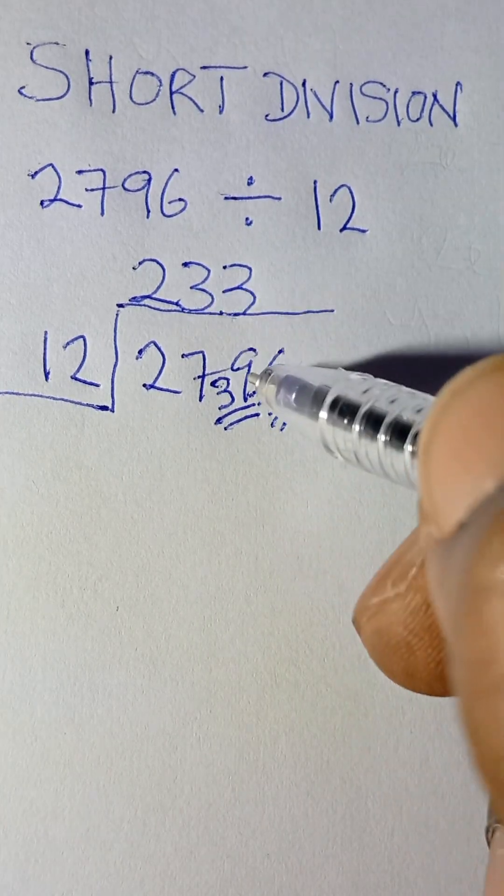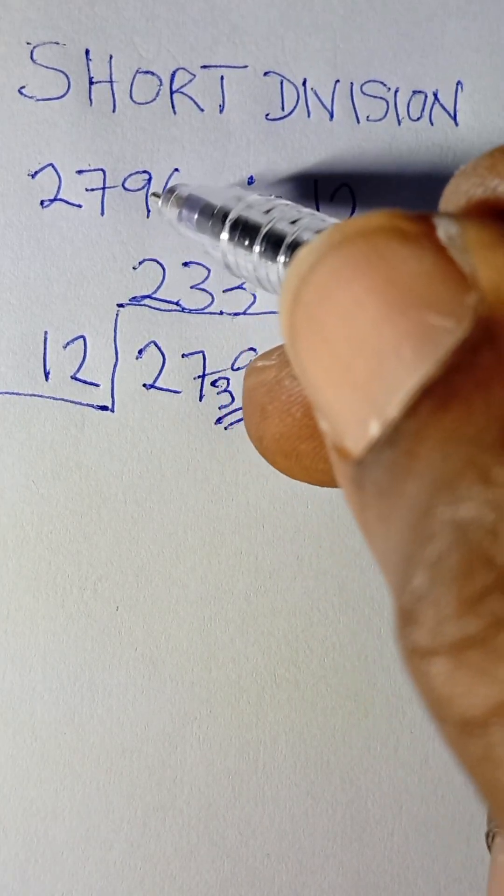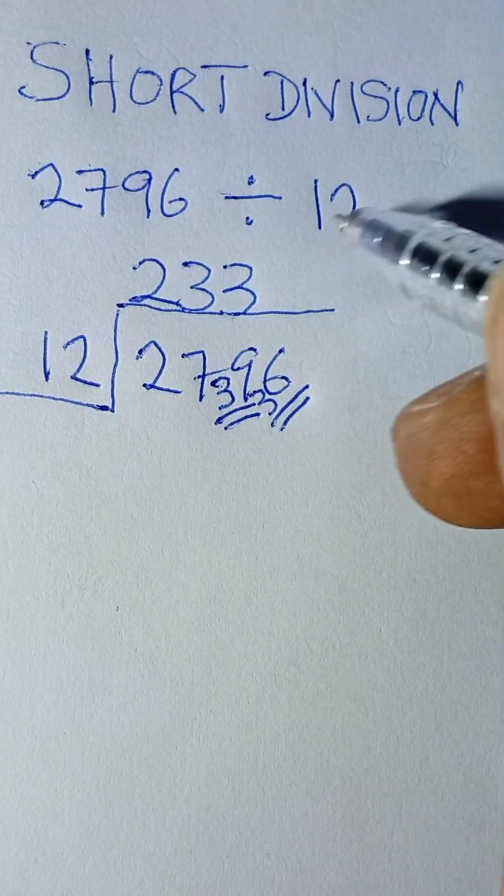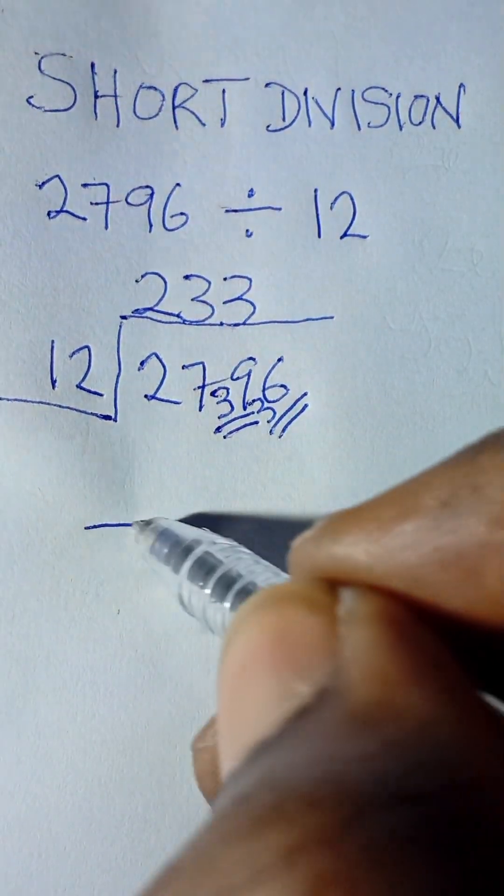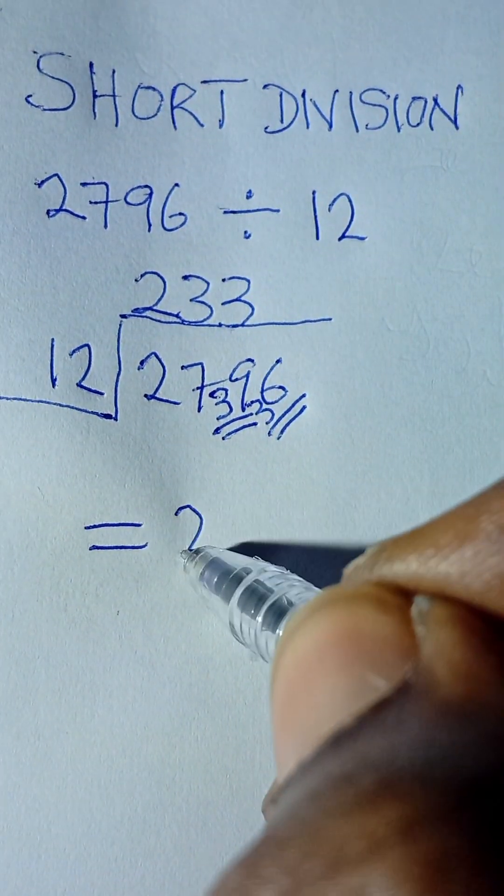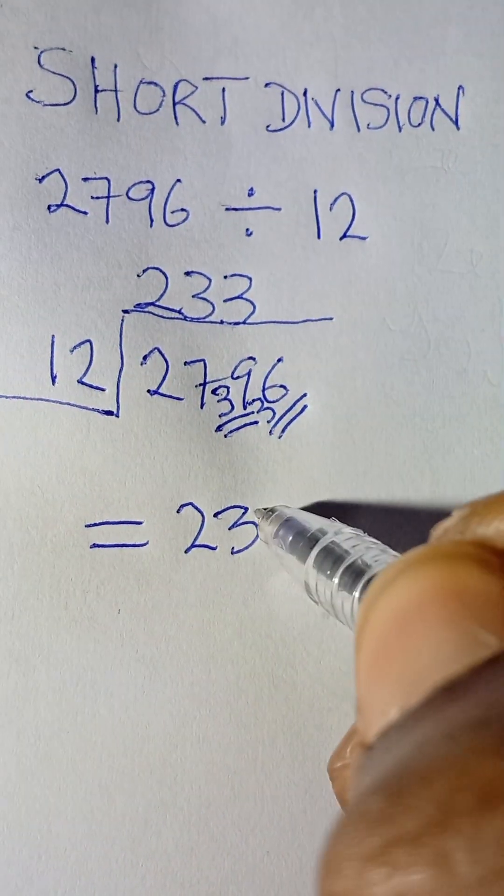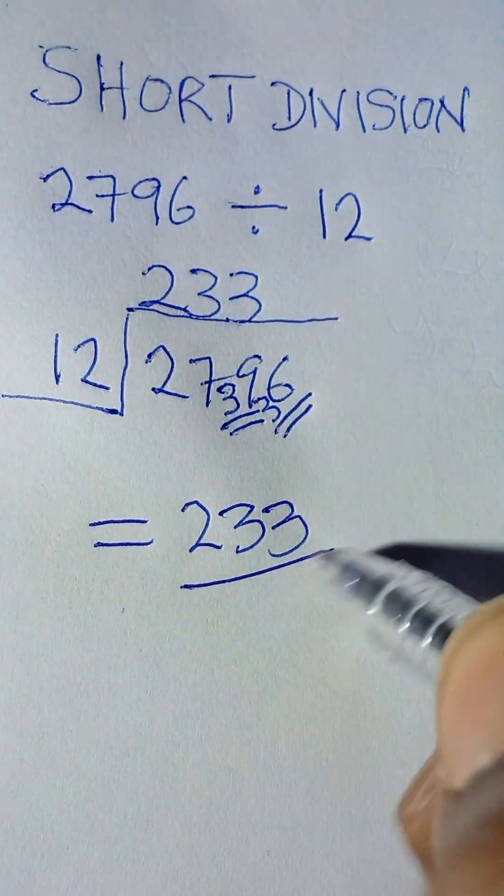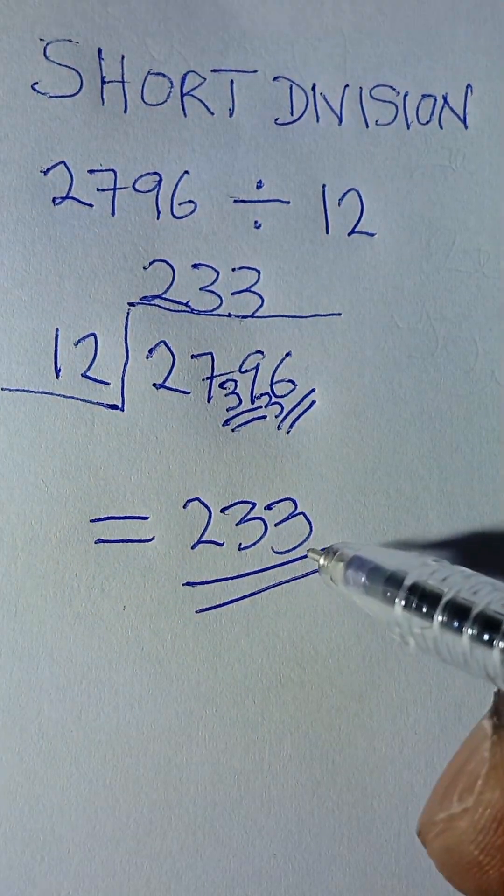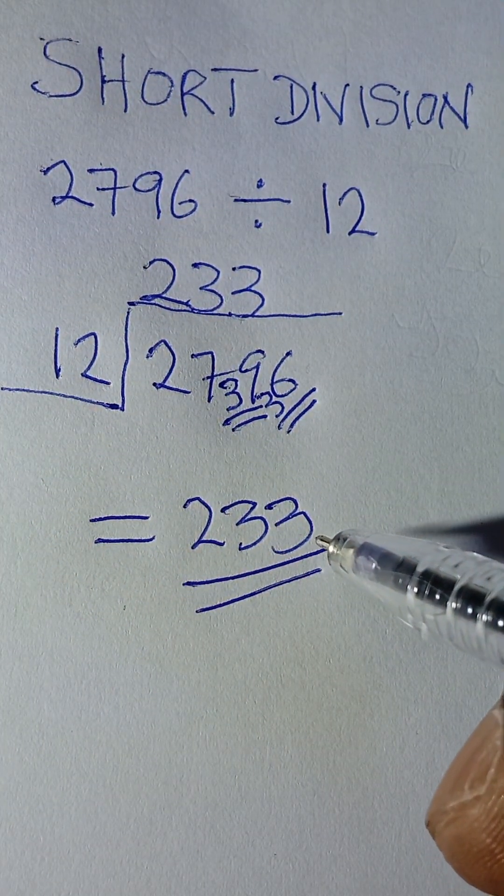So 2796 divided by 12 is actually 233. That is the final answer. So that is how to carry out short division. Thank you, please subscribe.